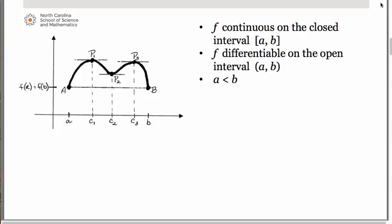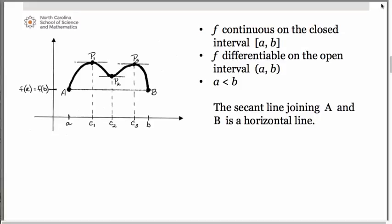Let f be continuous on the closed interval [a, b] and differentiable on the open interval (a, b), where a is less than b. Hopefully those conditions sound familiar to you from the mean value theorem. The difference here, though, compared to the mean value theorem, is that the secant line we have joining points A and B is now a horizontal line.